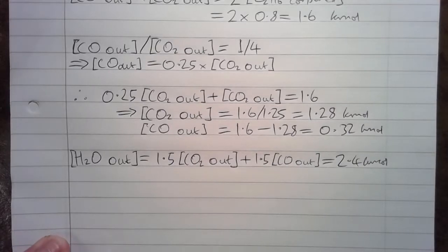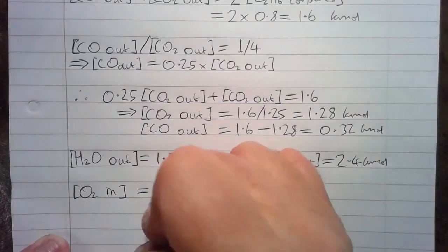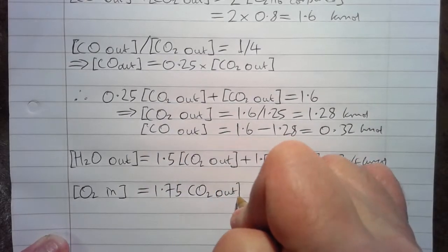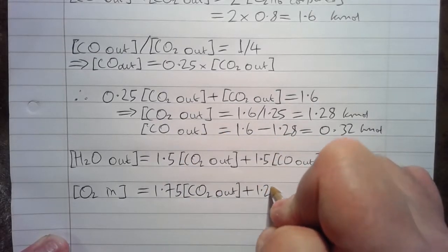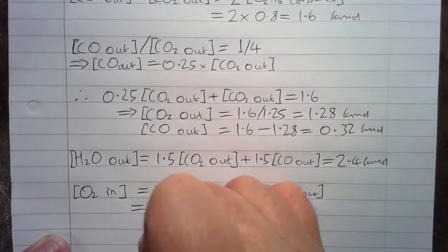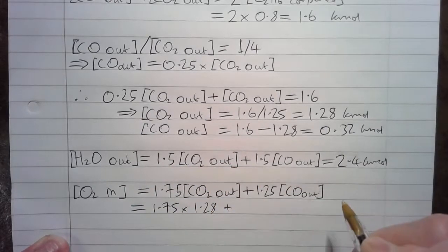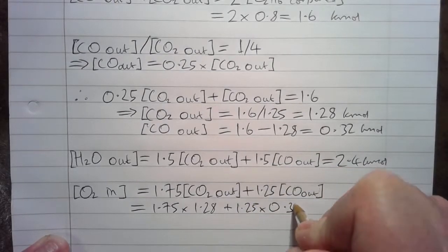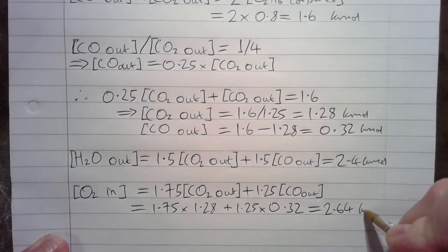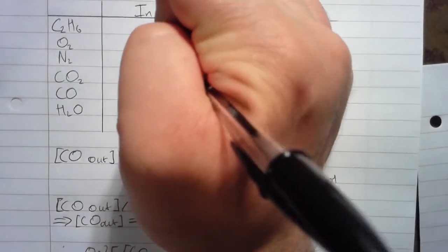In terms of the oxygen coming in, O2 in, again we can use the stoichiometry. We know that this is going to be 1.75 times the CO2 out and 1.25 of the CO out. So that will equal 1.75 times 1.28 plus 1.25 times 0.32, and that calculates to 2.64 K moles. So we can fill that in on the table, 2.64.